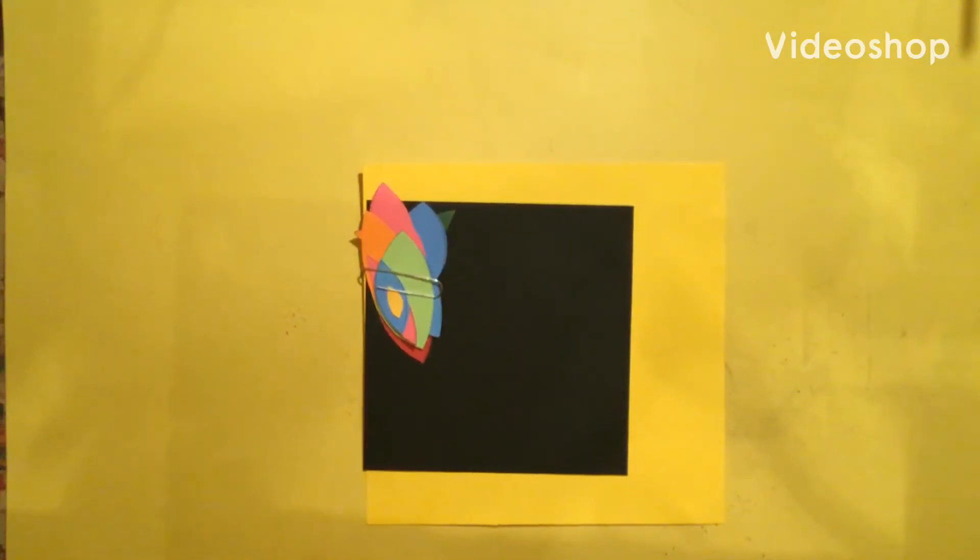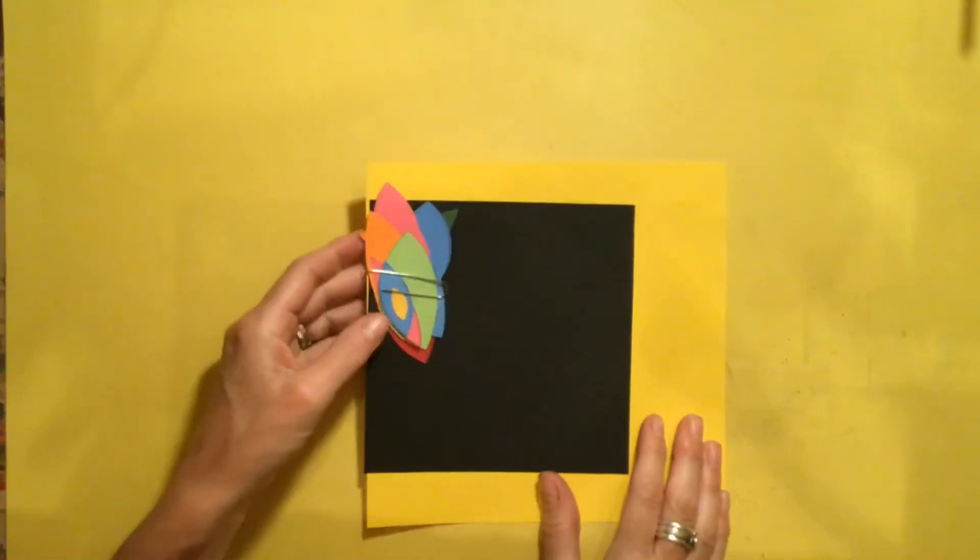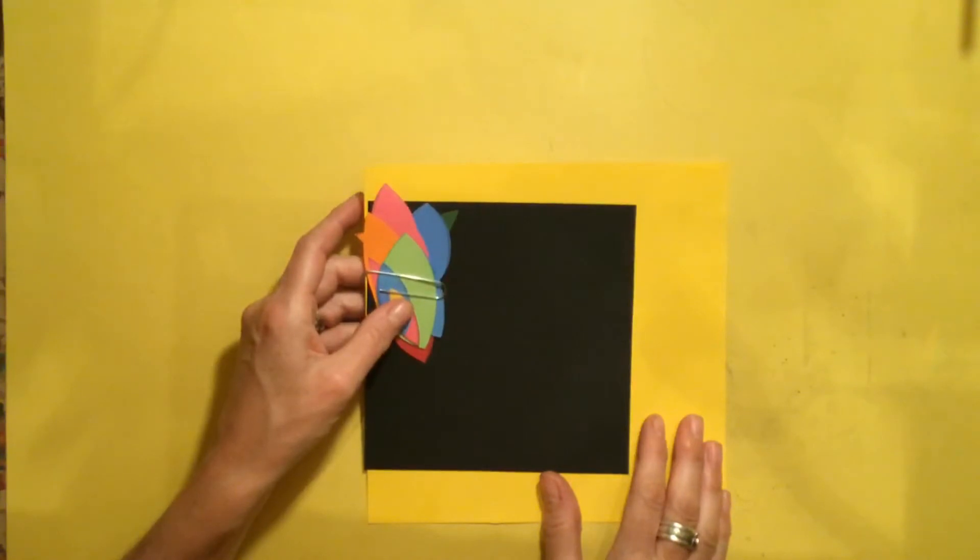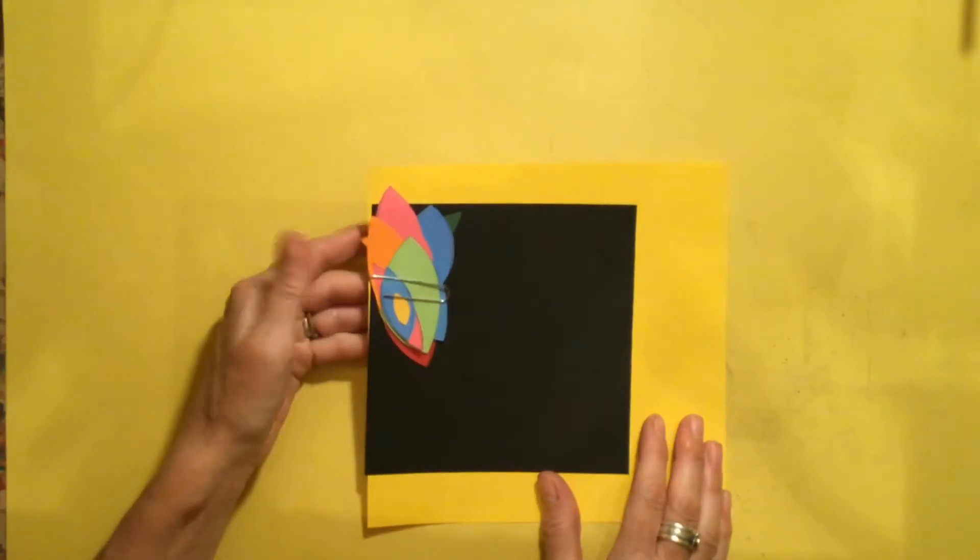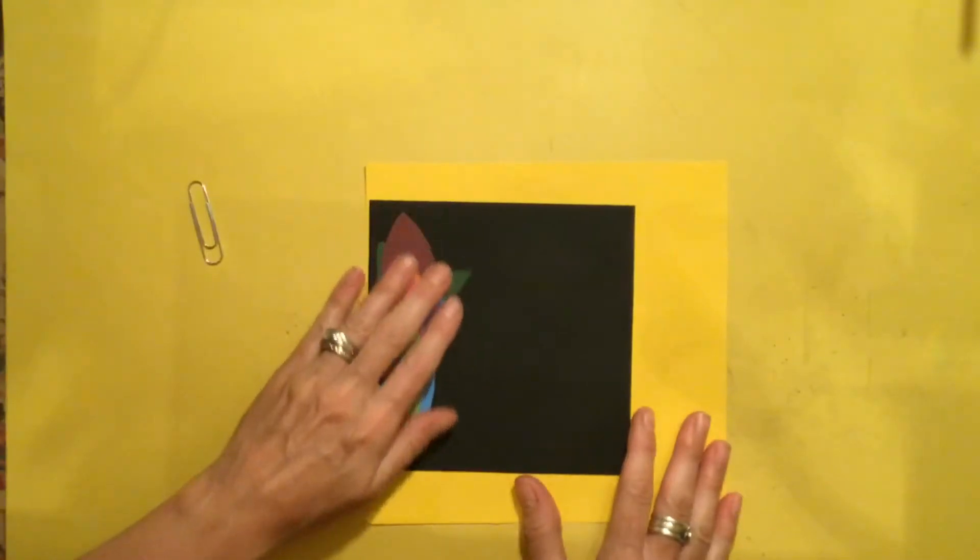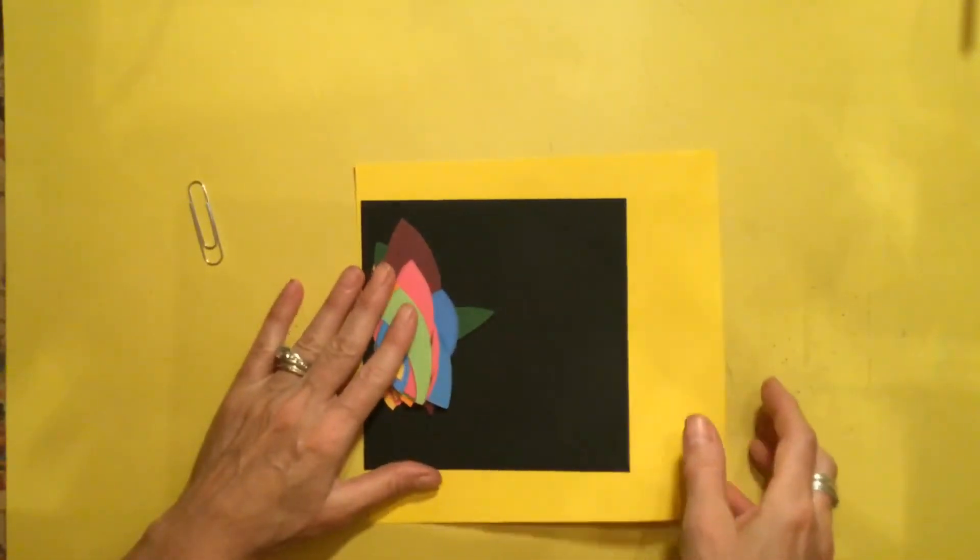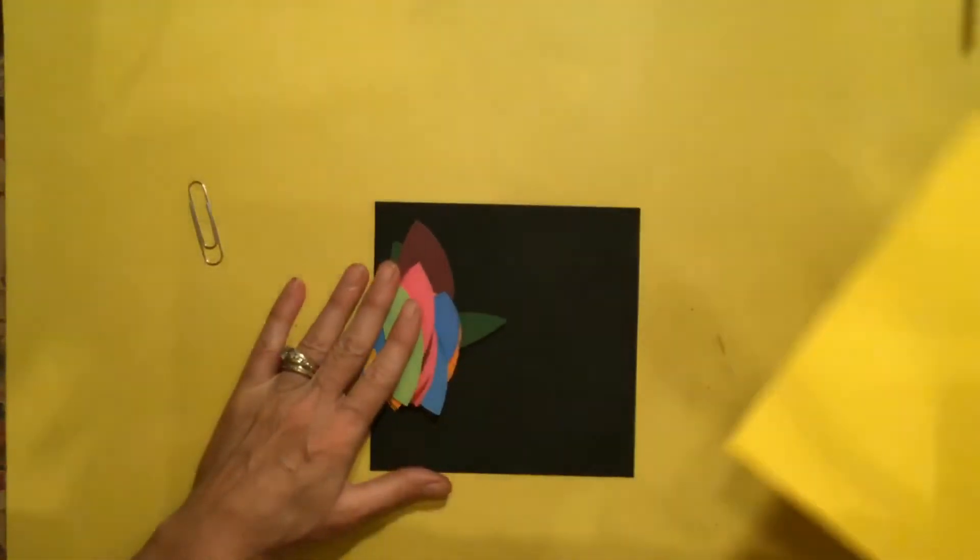Alright first grade friends, we are going to start on the second part of this project this week. What I want you to do is unclip your leaves that you cut out from last week, and we're going to put this yellow piece of paper aside.